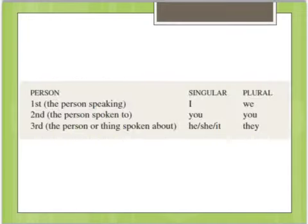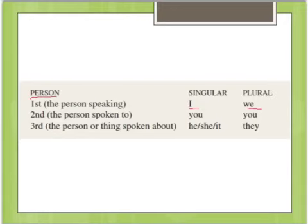Now we're going to talk about verbs. Verbs in Latin have what's called person and number. First person is the person speaking — singular or plural — which would be 'I' or 'we.' Second person is the person spoken to, which would be 'you' in both the singular and plural. Third person is the person spoken about, which in the singular is 'he,' 'she,' or 'it,' or 'they' in the plural.